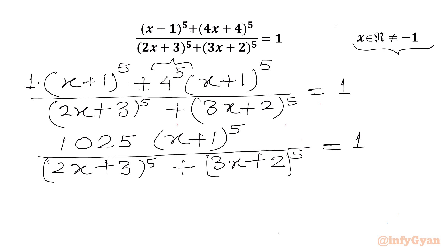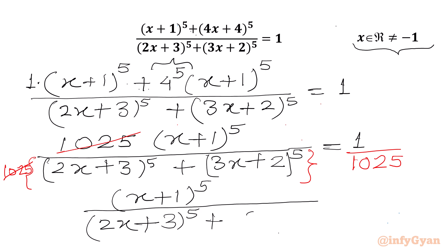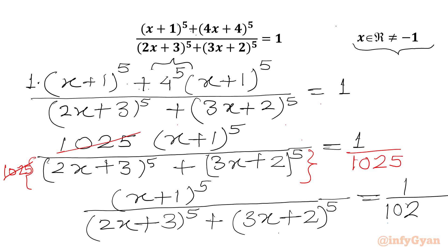Now we will divide both sides by 1025. So 1025 from numerator and denominator will be cancelled out on our left hand side. We will get (x+1)^5 over (2x+3)^5 plus (3x+2)^5, all over 1025.